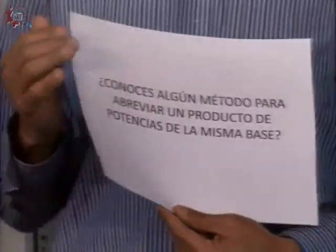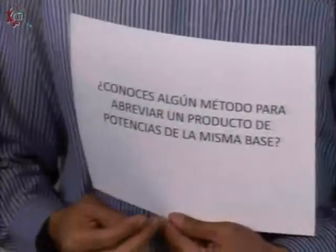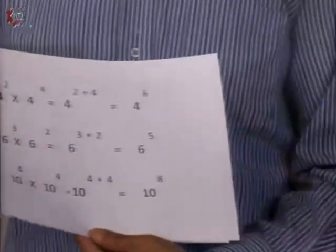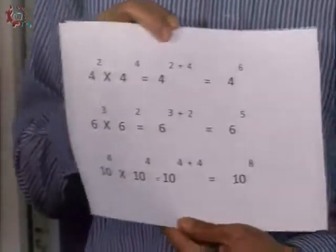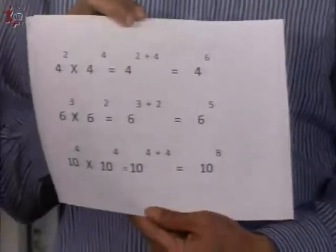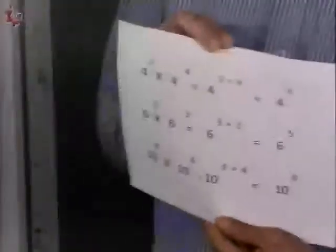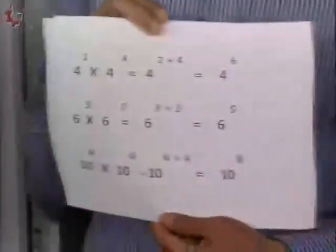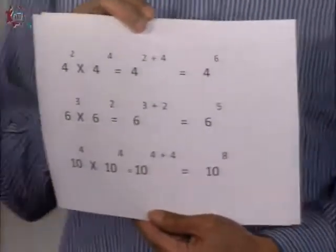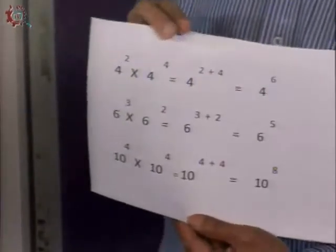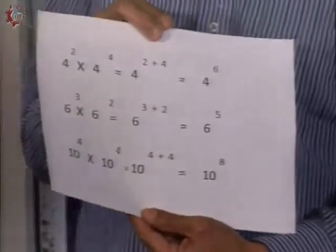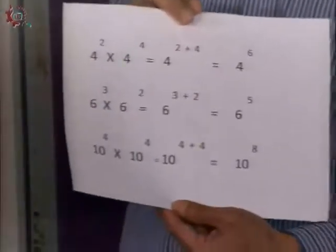Ahora, ¿tú conoces algún otro método que nos haga más fácil las cosas? Yo creo que sí. Fíjate en esto: cuatro elevado al cuadrado por cuatro elevado a la cuatro. ¿Qué es lo que hago? Lo único que voy a hacer es sumar los exponentes. Al sumar los exponentes, dos más cuatro me da seis. Y me da ya la potencia abreviada, que es cuatro elevado a la sexta potencia. Posteriormente, tienes que hacer el desarrollo: multiplicar seis veces ese cuatro y encuentras su resultado.